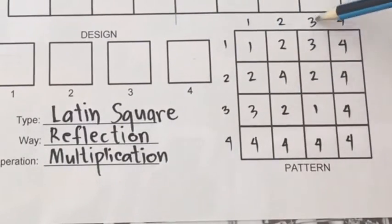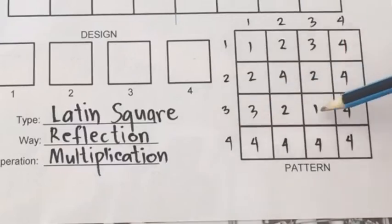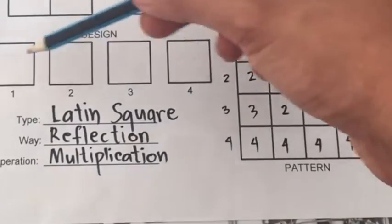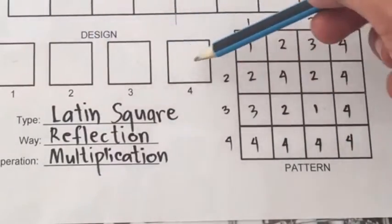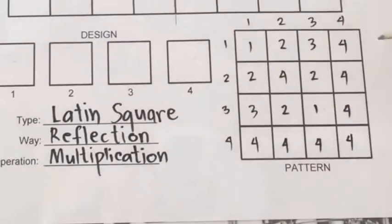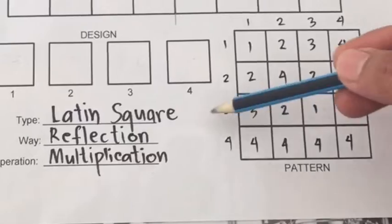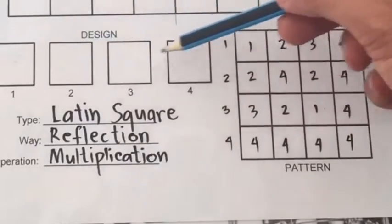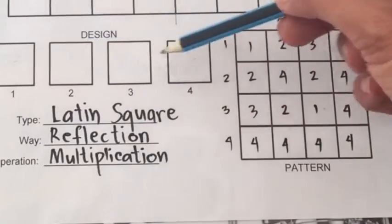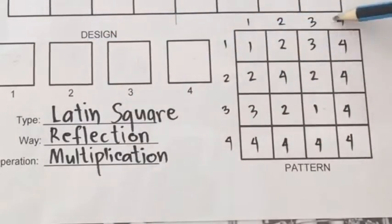2 times 3 is 6. 3 times 3 is 9 — counting 1 through 9 — it's 1. 4 times 3 is 12 — counting 1 through 12 — it's 4.